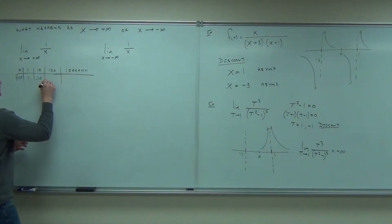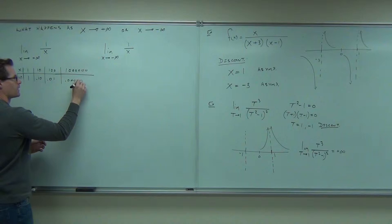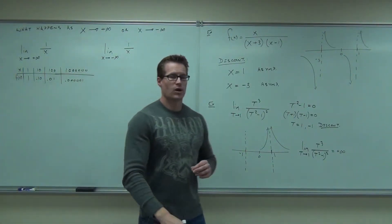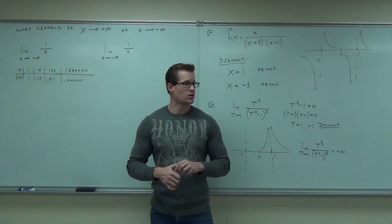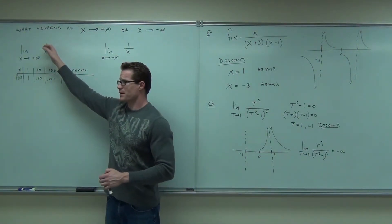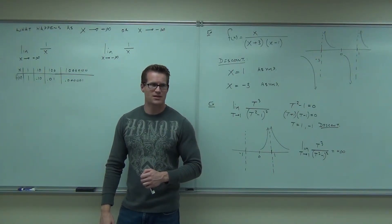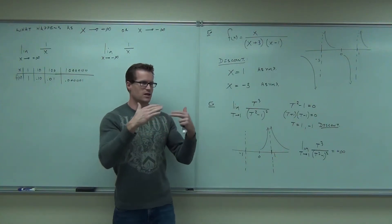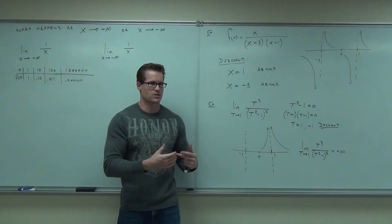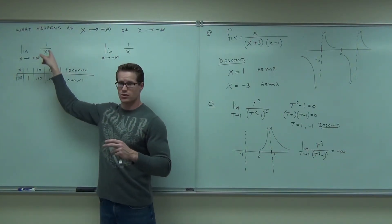How about 100? We get 0.01. How about a million? That's 0.000001 — five zeros. What if x equaled a trillion? Would it get bigger or smaller? Smaller. What's it going to? Zero. Is it ever going to reach zero? Never. But think about this — you're dividing a constant number by infinity. You keep dividing by a bigger and bigger number, you're going to get zero. One divided by a billion is very close to zero. You keep getting bigger and bigger, this quantity gets closer and closer to zero.